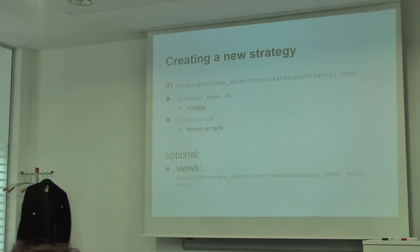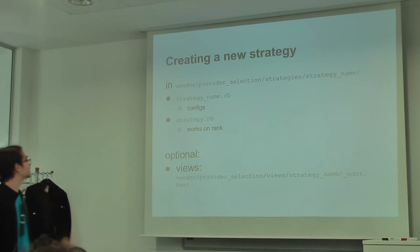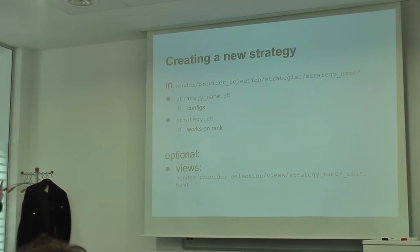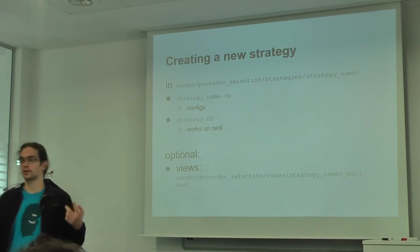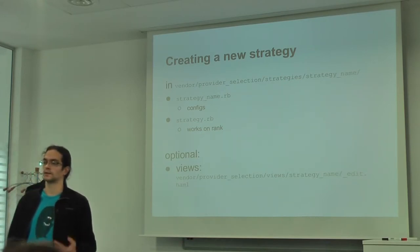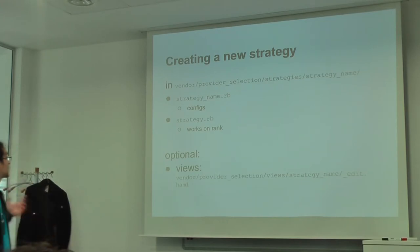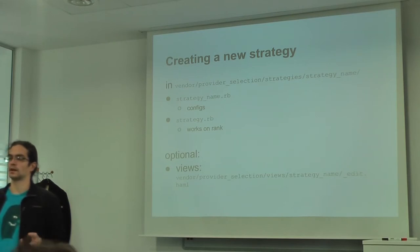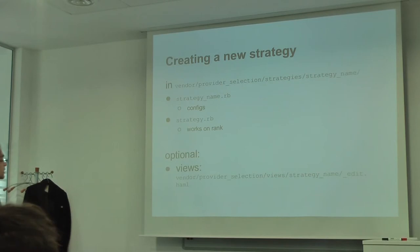Creating a new strategy should be simple. You just create a new directory in app/models/provider_selection/strategies. And you just put two files in that. The strategy name rb, which mainly just calls configs and stuff like that. And the strategy rb, which is the actual implementation of the strategy. And what basically every strategy does is just work on the rank, modify priority groups, modify the scores of the matches.